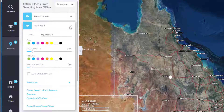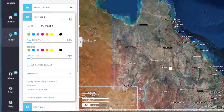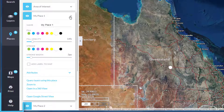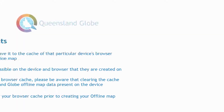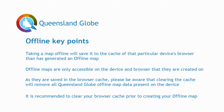See the help section for further details on bringing your offline places back into an online Queensland Globe session. Please keep in mind that maps for offline mode are stored in the cache of your internet browser. Once you have saved your offline work back into an online map, you can then clear the cache to free up space on your device.